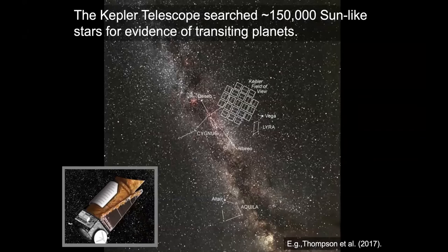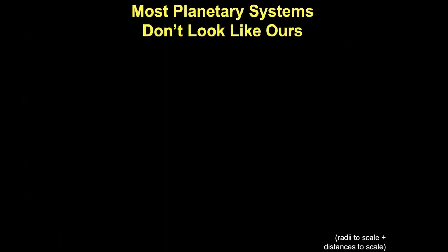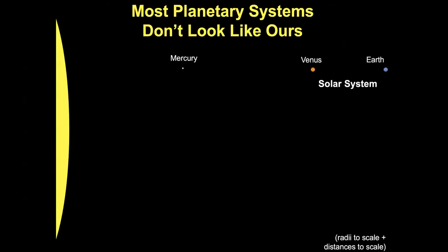The most successful planet-hunting mission to date was the Kepler survey — a space telescope that stared at a patch of sky near the constellation Cygnus with a field of view of about 100 square degrees, continuously for almost four years. It searched the light curves of about 150,000 mostly sun-like stars for evidence of transiting planets, detecting thousands of new transiting planets and planet candidates. Much of what we know about the population of exoplanets comes from this survey. One key takeaway was the realization that most planetary systems don't look like the solar system, particularly in their inner regions.